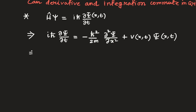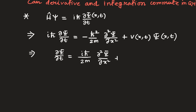Let us write it in another form: del ψ del t equals ih-bar over 2m times del² ψ del x² plus V over ih-bar times ψ(x,t). All of these are in general functions of x and t.